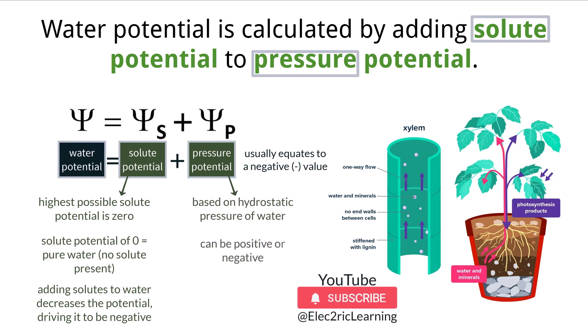This number can either be positive or negative based on the environment, and a higher hydrostatic pressure leads to a higher potential pressure, and vice versa.